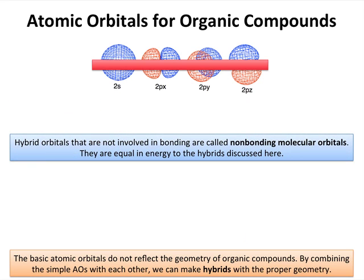Although we most often think about hybrid orbitals as participating in bonds, in many cases hybrids can also be used to hold electrons. When they just hold a lone pair and don't participate in bonding, we call these non-bonding molecular orbitals.